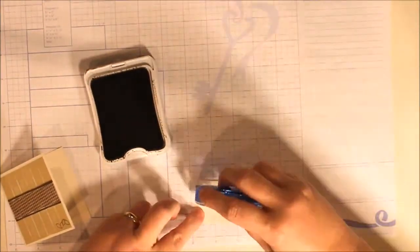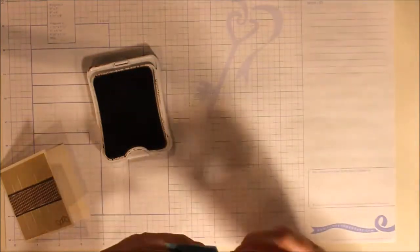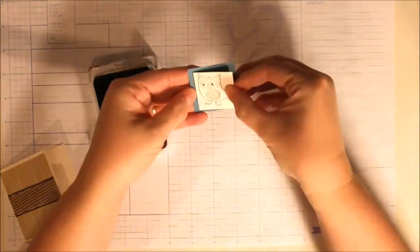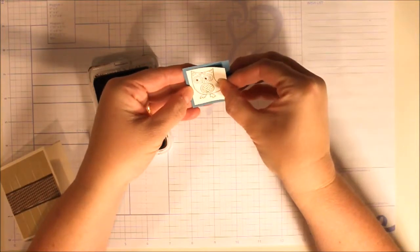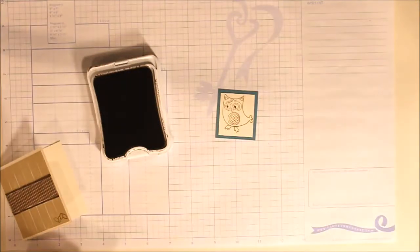We're going to glue the Colonial White piece onto the Twilight piece, and then color it in with some markers.